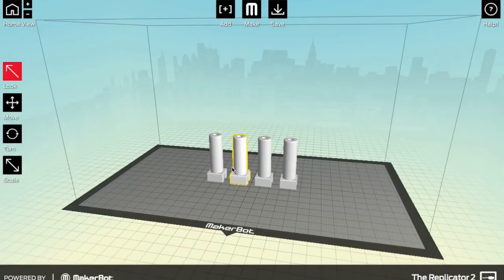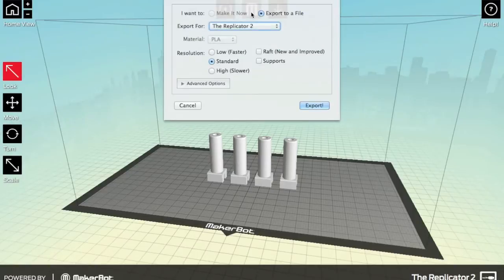And you can move these around on the build platform to lay them out before you print them. So after doing that, I went ahead and clicked Make. And then I exported to my SD card. And then the SD card is what we're going to use to load the file on the MakerBot Replicator 2 and begin our print.